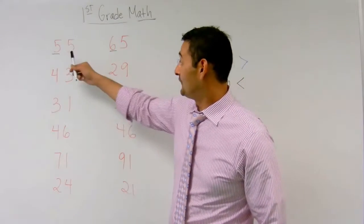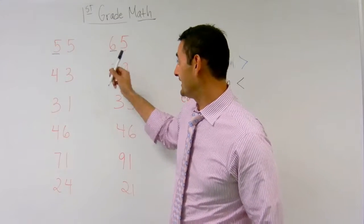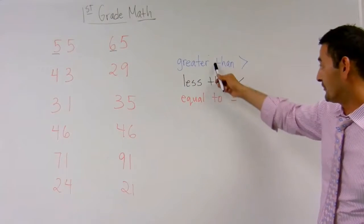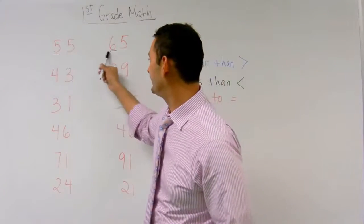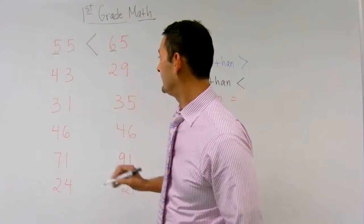Which one is larger, the 5 or the 6? The 6, right? So, 55 is smaller than 6, so which one are we going to use? Greater than, less than, or equal to? Less than is correct because 5 is less than 6. And there you go.